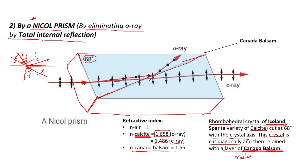The refractive index of Canada Balsam is 1.55. As the light enters the Iceland Spar, it is divided into two rays — ordinary and extraordinary. The ordinary ray travels in the calcite with refractive index 1.658. When it travels straight in its path, it encounters the Canada Balsam layer where the two diagonally cut crystals were rejoined. As it passes into the Canada Balsam, the refractive index it suffers is now 1.55 — meaning the ordinary ray is traveling from a denser medium to a rarer medium, which is the condition for total internal reflection.